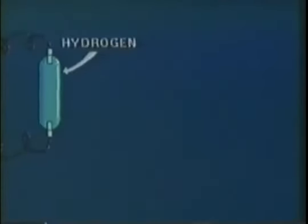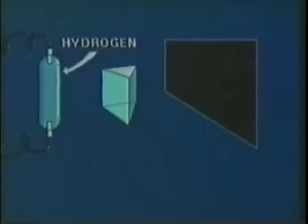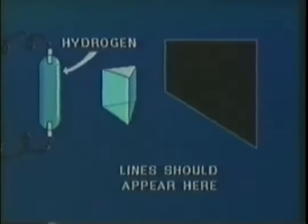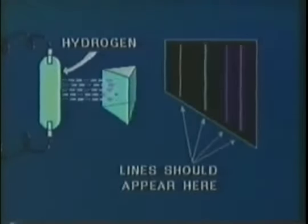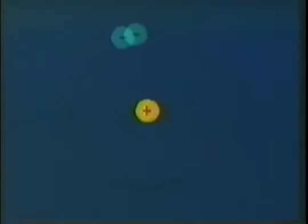Bohr initially worked with the hydrogen atom, and he was successful in predicting and explaining a number of its properties, including a mathematical relationship that predicted what its spectrum would look like when the atom is excited. In hydrogen, a single proton is located in the nucleus, and a single electron orbits the nucleus.